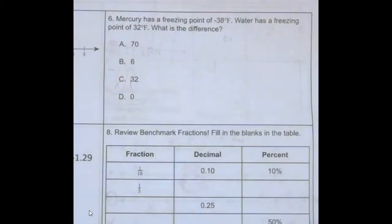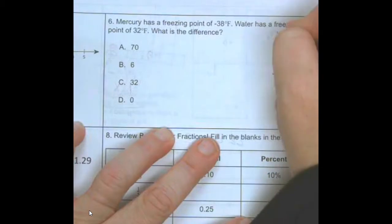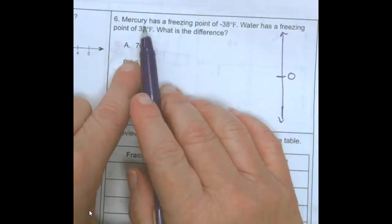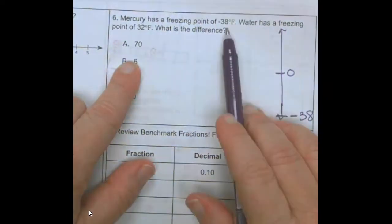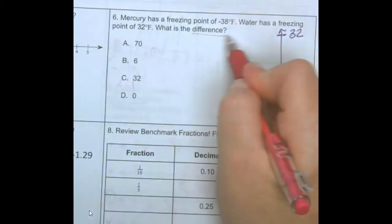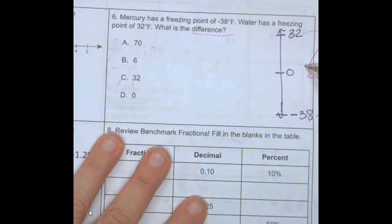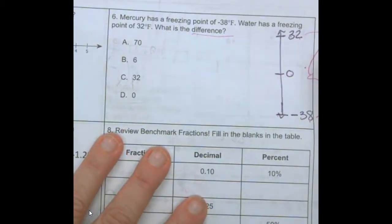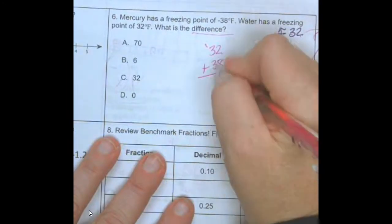Number six involves temperature. I like to draw a number line to represent a thermometer. Mercury has a freezing point of negative 38, way down here. Water has a freezing point of positive 32. What is the difference — the distance between these two? How do we go from negative 38 to 0? That's 38 points. How do we go from 0 to 32? That's 32. So 32 plus 38 gives me 70.